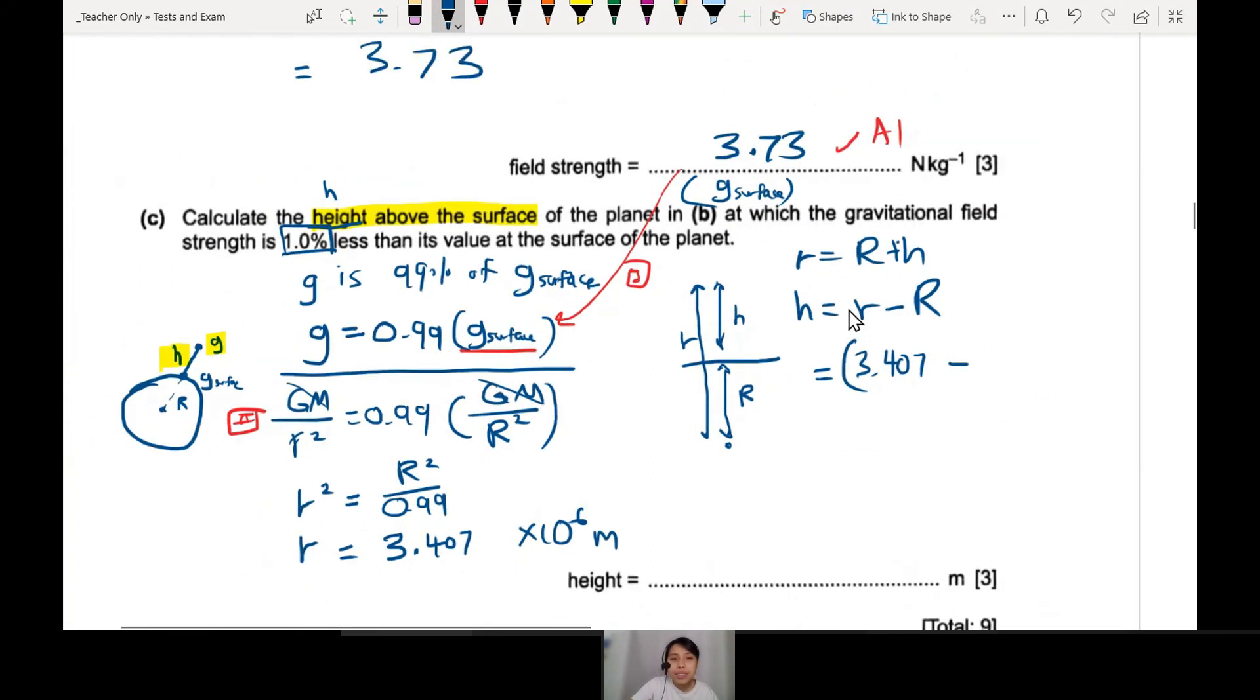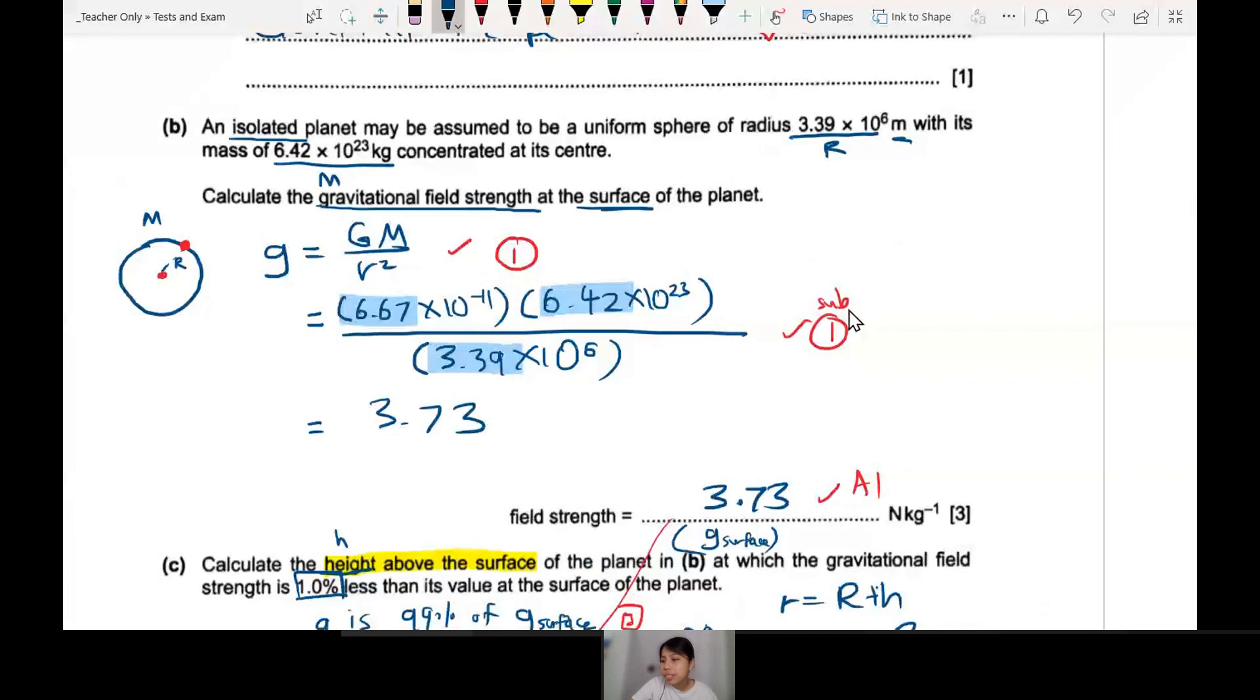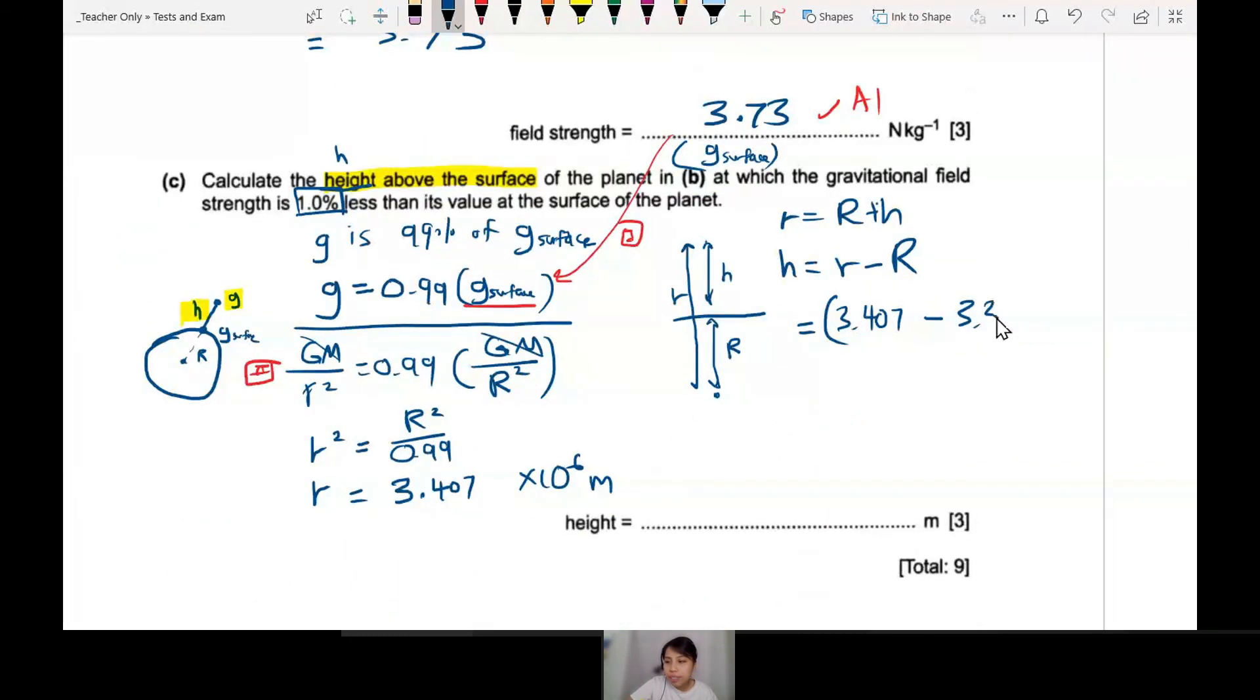r we just found down here, 3.407 minus what's the radius of the planet? Check your paper - oh it's 3.39. So we write there 3.39, that's our radius, times 10 to the 6. Now this kind of - it's okay, you can use 3.407 or you can round it off to 3sf, 3.41, because it seems more matching. Either one is okay. So this will give me 0.02 times 10^6 meters.